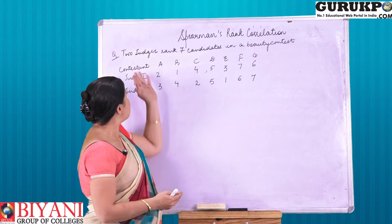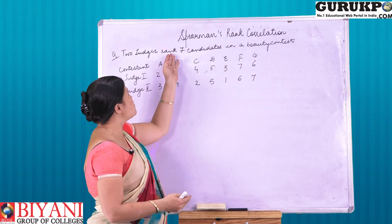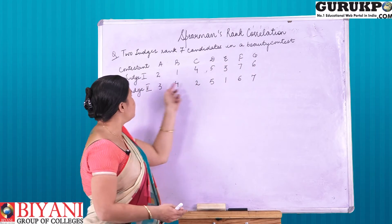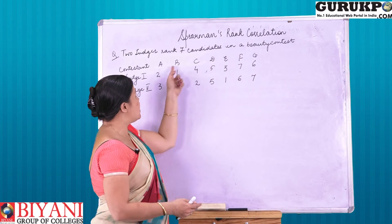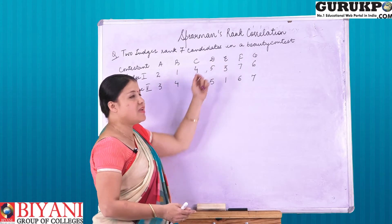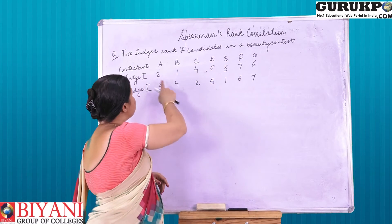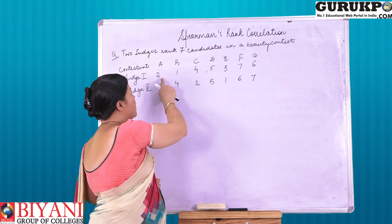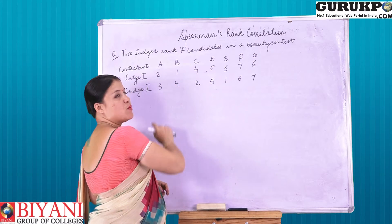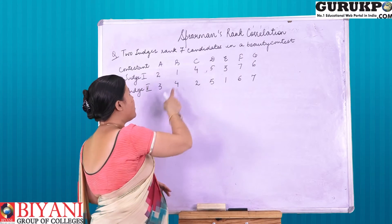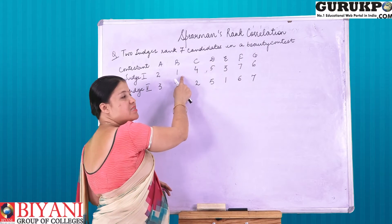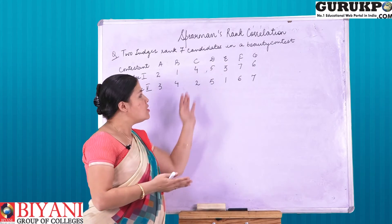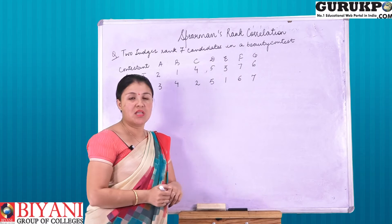The question is: two judges rank seven candidates in a beauty contest. The contestants are A, B, C, D, E, F, and G. These are the ranks given by the judges. Judge one has given rank 2 for A, rank 1 for B, and so on, moving on till G.